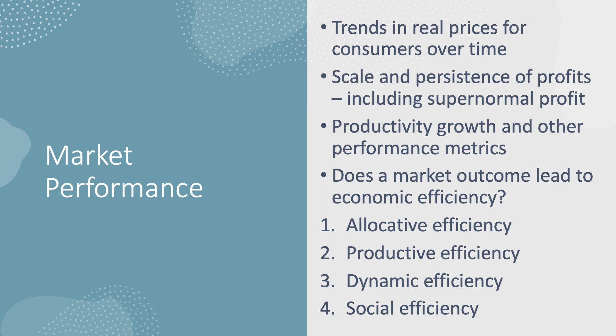Crucially, you can't go wrong in A-level or IB assessments if you link market outcomes to types of economic efficiency. Allocative efficiency relates to the pricing of goods and services. Productive efficiency is about making full use of scarce resources and producing close to minimum unit cost. Dynamic efficiency is closely linked to the pace of innovation. And social efficiency concerns whether markets produce outcomes that are socially efficient — accounting for externalities — and socially equitable in terms of fairness across countries, consumers, and generations.